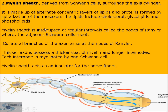The myelin sheath is interrupted at regular intervals called nodes of Ranvier, where adjacent Schwann cells meet, and collateral branches of the axon arise at these nodes. The myelin sheath acts as an insulator for the nerve cells. Thicker axons possess a thicker coat of myelin and longer internodes, and each internode is myelinated by one Schwann cell.